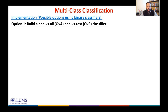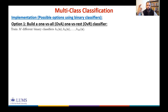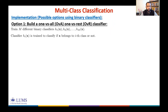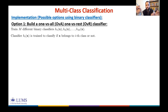In this OVA or OVR approach, we train M different binary classifiers. As the name suggests, each classifier Hi is trained to classify whether x belongs to the i-th class or not — that is, one class versus all the rest. So Hi is a binary classifier that determines whether a test point belongs to the i-th class versus all other classes.